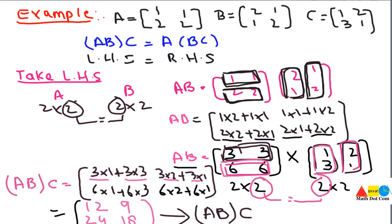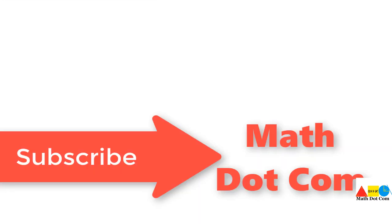The same formula will be applied if you use the right-hand side, in which you multiply B and C first and then the result is multiplied with A. So this was all about how you can multiply three matrices. Thank you.